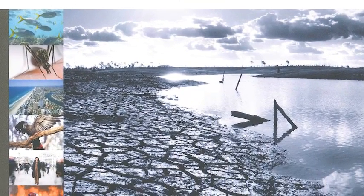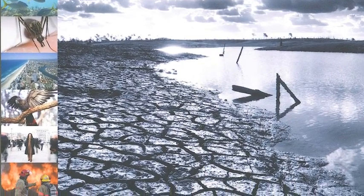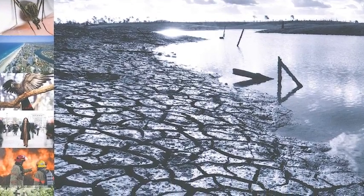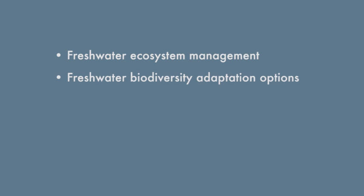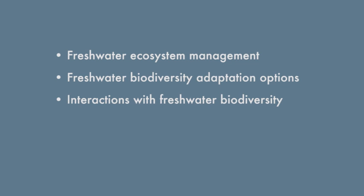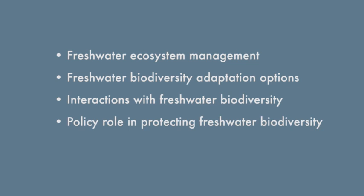The priority questions in this plan are around five topics: climate adaptation and freshwater ecosystem management, adaptation options for freshwater biodiversity, interactions between freshwater biodiversity and other sectors, the policy role in protecting freshwater biodiversity, and adaptation issues that cut across freshwater biodiversity and other sectors.